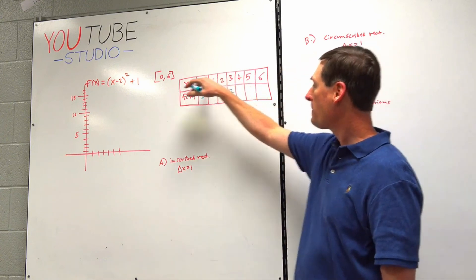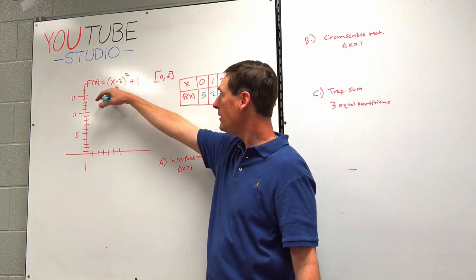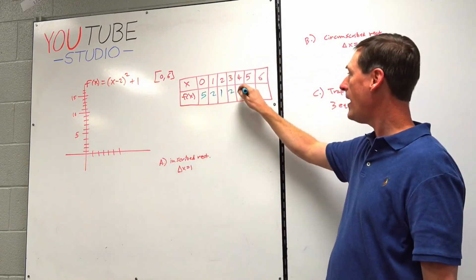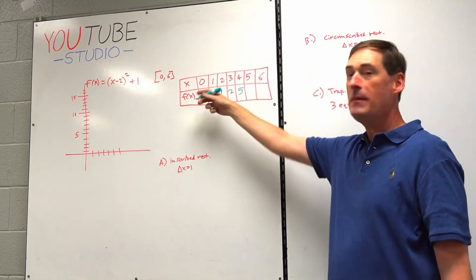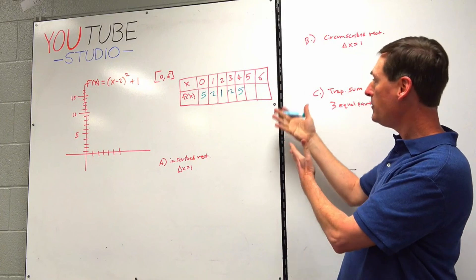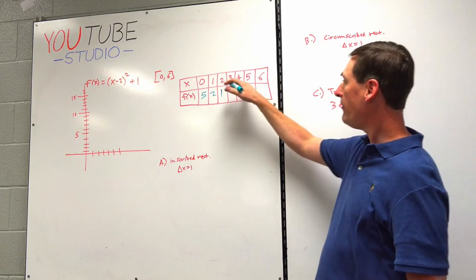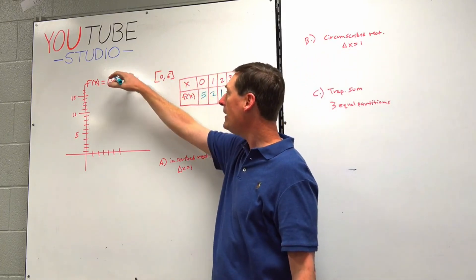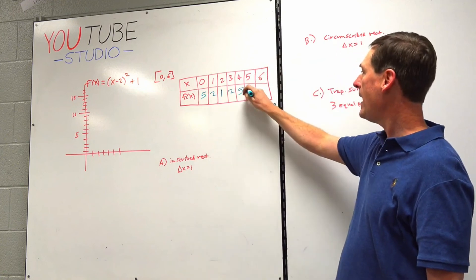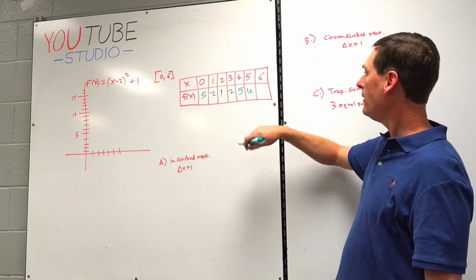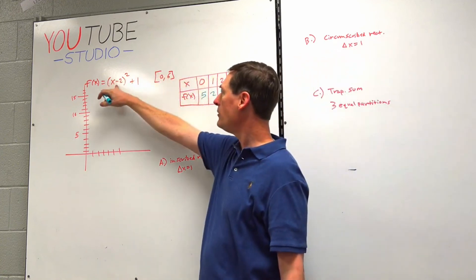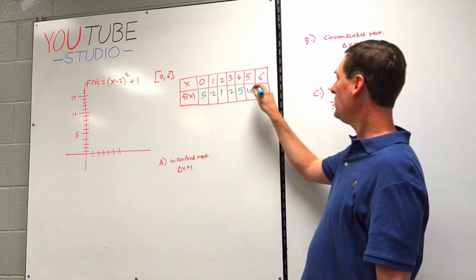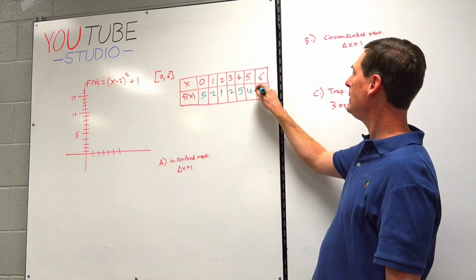For x equals 4: 4 minus 2 is 2, 2 squared is 4, plus 1 is 5 — it's a mirror image. For x equals 5: 5 minus 2 is 3, 3 squared is 9, plus 1 is 10. And finally, 6 minus 2 is 4, 4 squared is 16, plus 1 is 17.